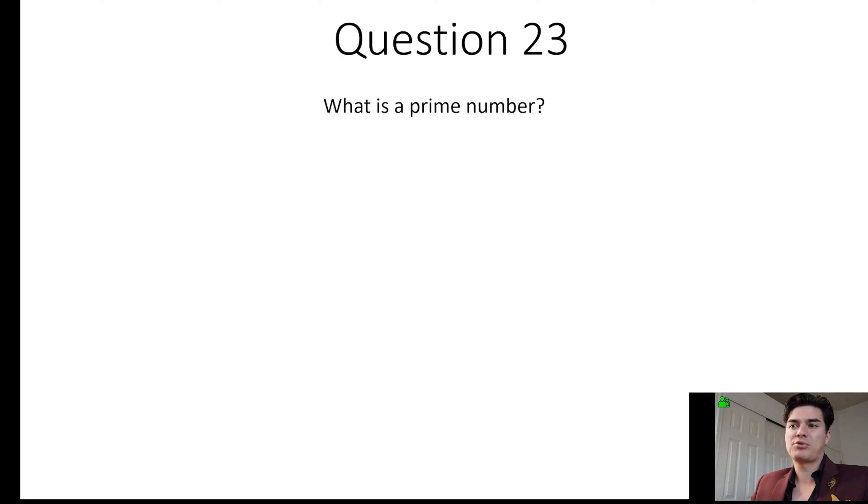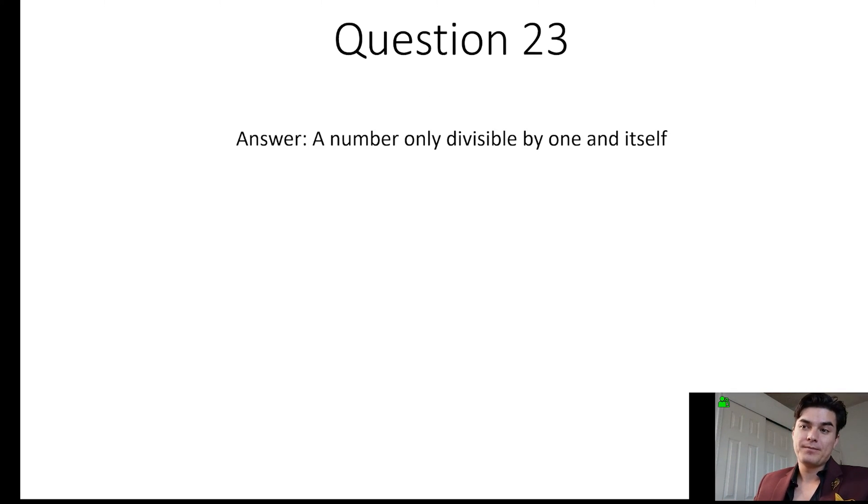Question 23. What is a prime number? I didn't put any options on here. The prime number is a number that is only divisible by itself or the number one. And the reason that they use prime numbers in cryptography is that it's just uniquely mathematical and it makes for very good encryption.